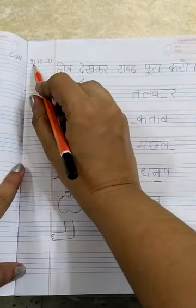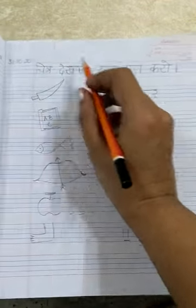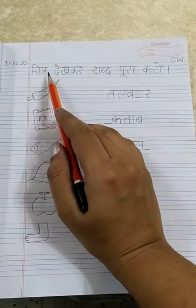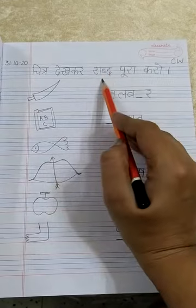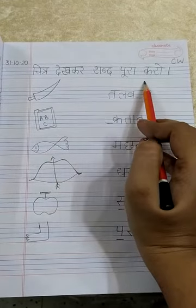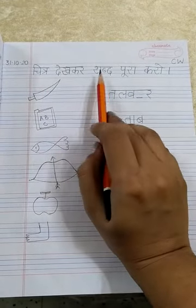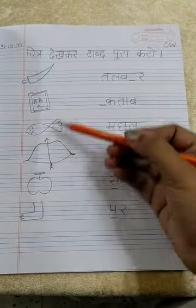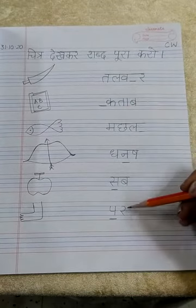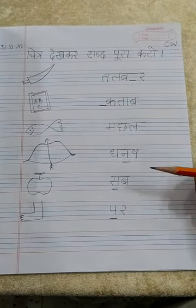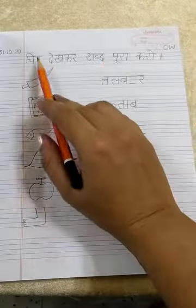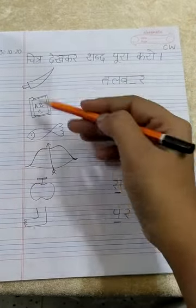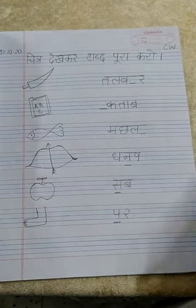Now next page. Write the date: 31st October 2020. And on the right hand side, write the heading: Chitr Dekkar Shabd Pura Karo. Here I have made some Chitr on the left hand side and right hand side. Shabd Likhi Hai, but the Shabd Pura Nahi Likhi Hai. The heading is: Chitr Dekkar Shabd Pura Karo. Okay?